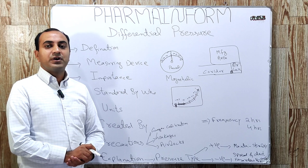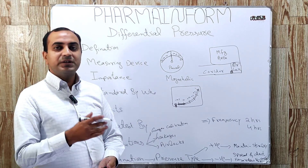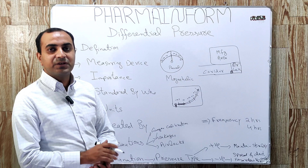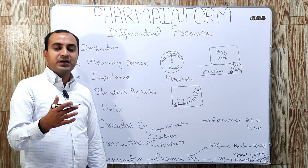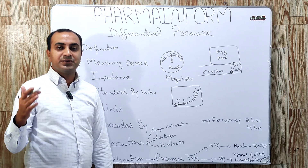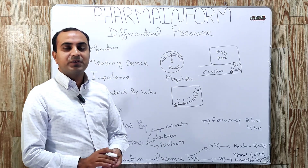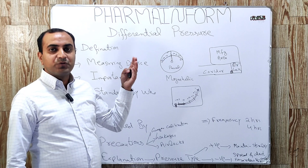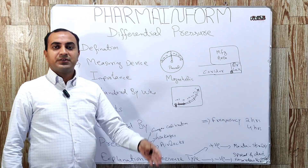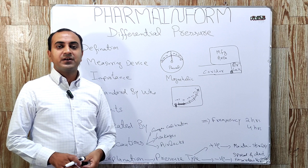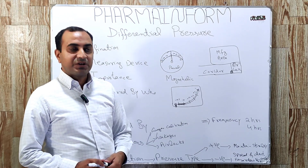So let's start our video. What is differential pressure? Basically, differential pressure is the difference of pressure between a manufacturing area and its adjacent area. In simple words, the difference of atmospheric pressure of the manufacturing area to the adjacent area, which is the corridor, is known as differential pressure.